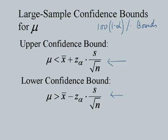Similarly, large sample confidence bounds for mu: the 100(1 minus alpha)% upper confidence bound and the 100(1 minus alpha)% lower confidence bound are each given by one-sided formulas. In other words, we make statements that mu would not exceed a certain value with a confidence level of 100(1 minus alpha)%, given through the upper confidence bound, and similarly for the lower confidence bound.